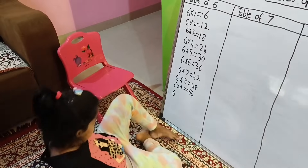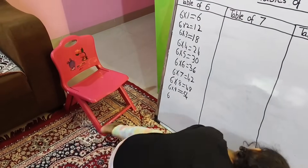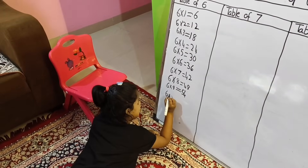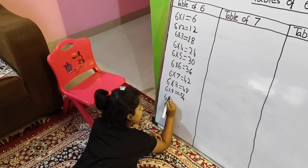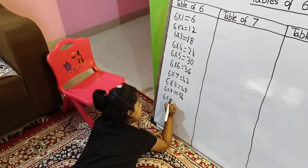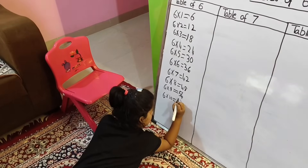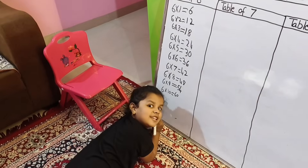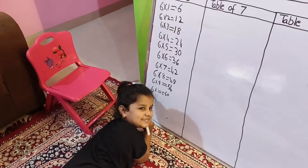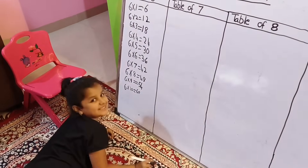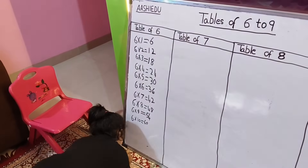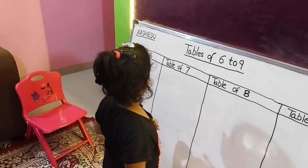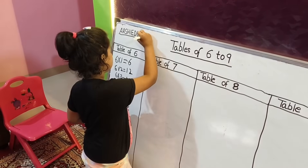Six. Six multiply one equal six. Two. Fifty, sixty. One hundred. Five hundred. Five percent.